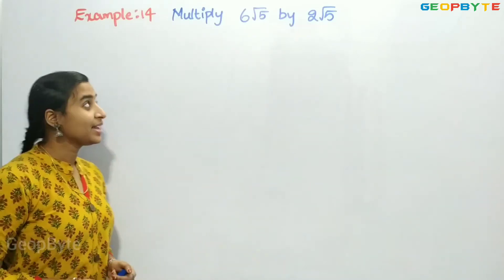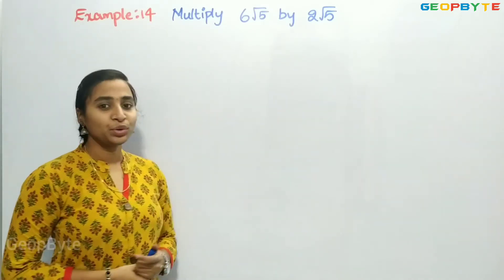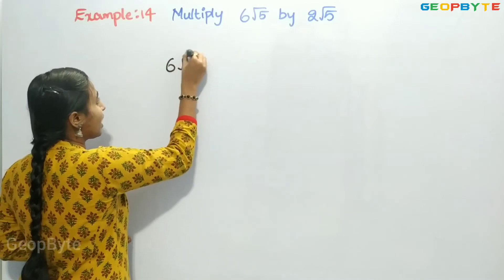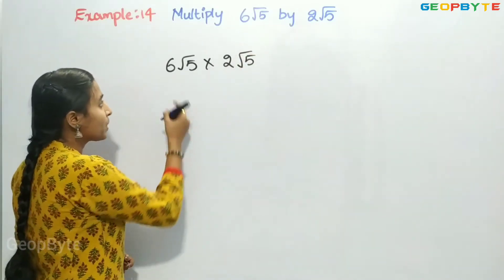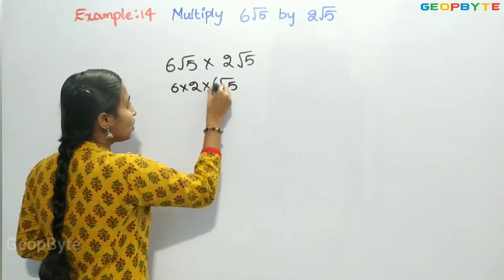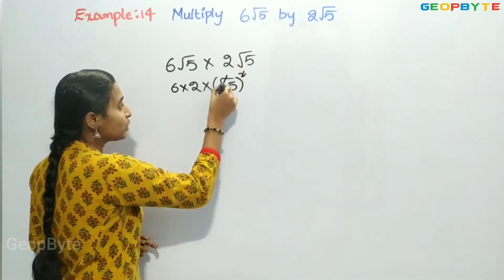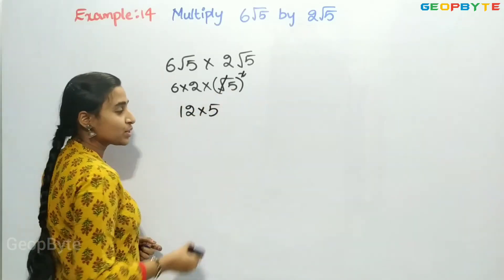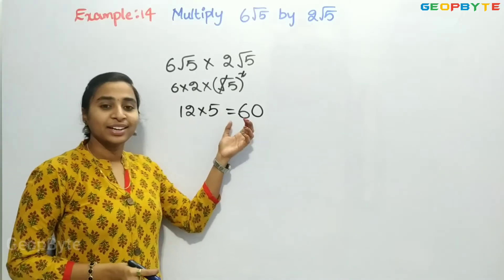Let us see example number 14: multiply 6 root 5 by 2 root 5. We compute 6 root 5 into 2 root 5, which equals 6 into 2 into root 5 whole square. The square and root cancel, giving 6 times 2 times 5. That is 12 times 5, which equals 60. In this case of multiplication, we got a rational number.